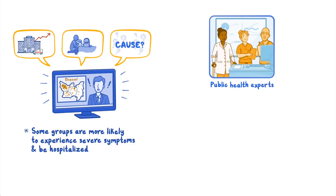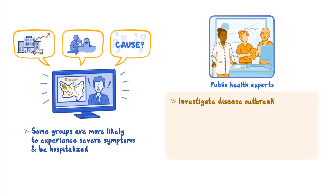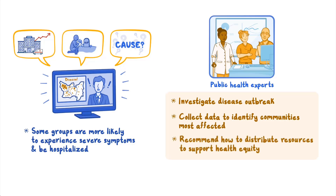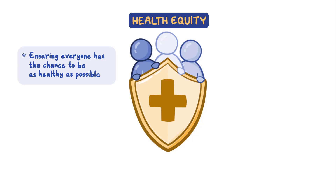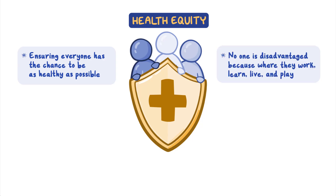A team of public health experts is investigating the disease outbreak. The team is collecting data and information to identify communities most affected. They are also working with local organizations and making recommendations for how to distribute community resources, reduce disease spread, and support health equity. Health equity means ensuring that everyone has the chance to be as healthy as possible and no one is disadvantaged because of where they work, learn, live, and play. The team may begin by considering possible exposures.